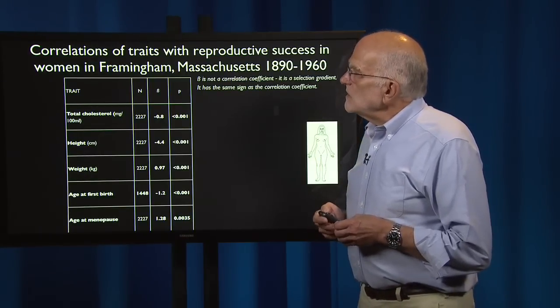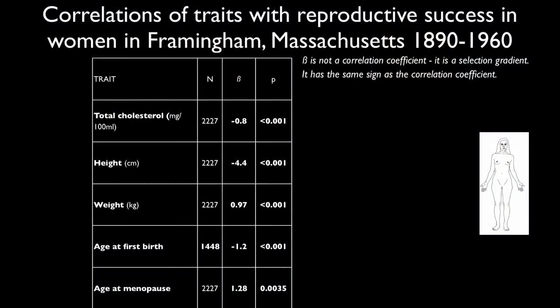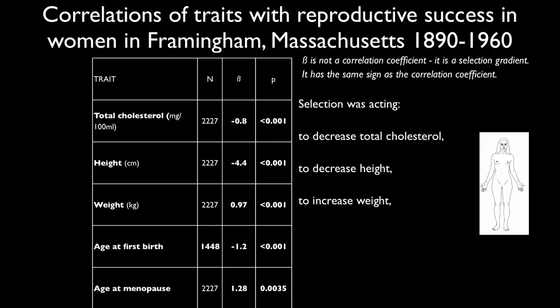Here is a table of traits correlated with reproductive success in women from Framingham, Massachusetts, born between 1890 and 1960. The traits are cholesterol, height, weight, age at first birth, and age at menopause. The beta shown is a selection gradient with the same sign as a correlation coefficient. Sample sizes are large and p-values are small. Selection was acting to decrease total cholesterol, decrease height, increase weight, decrease age at first birth, and increase age at menopause. Selection is acting in a contemporary human population, and this result has been confirmed in other populations as well.